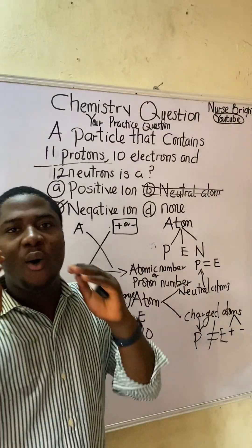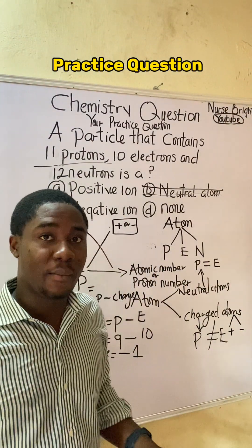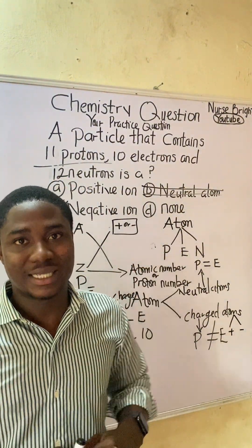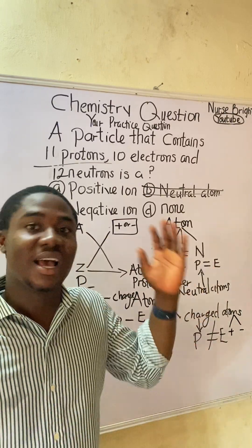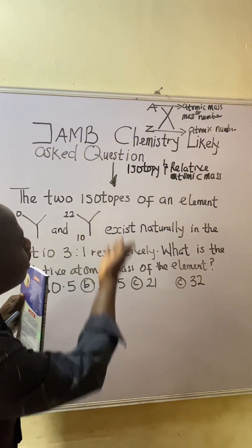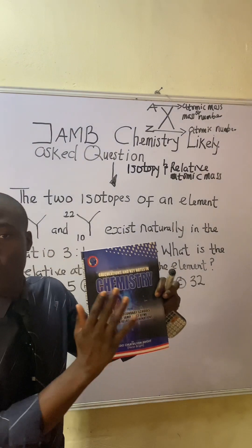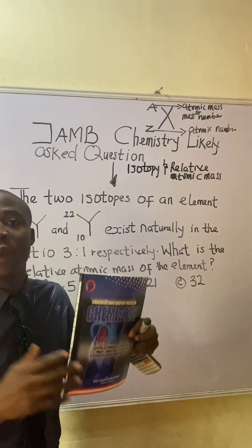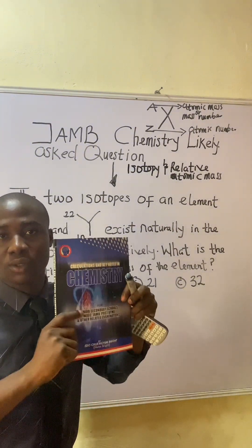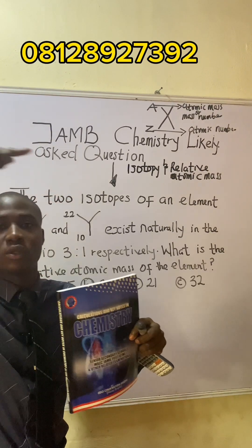Here is a practice question for you to solve — provide your answer in the comment section. Use the pattern and concepts I just explained. For more chemistry calculations and problem-solving, check out my Chemistry Masterpiece book. If you are preparing for the JAMB exam, this book is very important. For more information, send me a direct message on WhatsApp — the number will be on the screen.